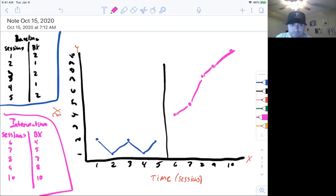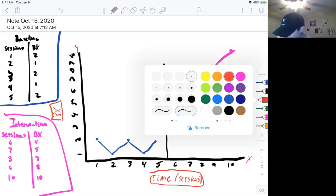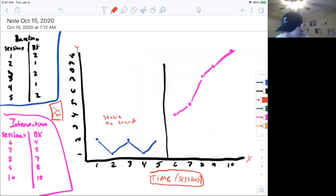And there you go, right? Very straightforward. All you're doing is you're matching up your sessions, or your time to the behavior. Put it on the line graph, connect the dots, and as you can see, now you have your data. So how would you interpret that data? Okay, well, we would say our baseline data is stable. No trend.